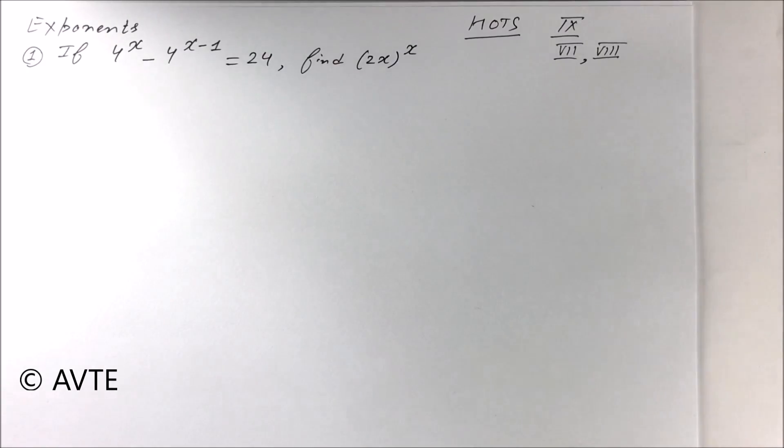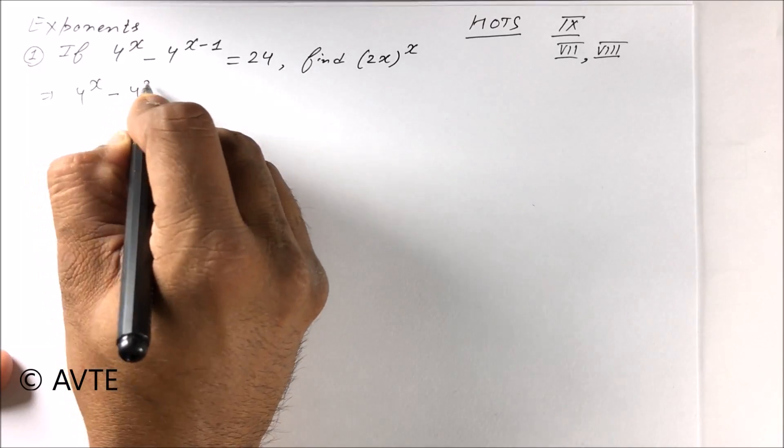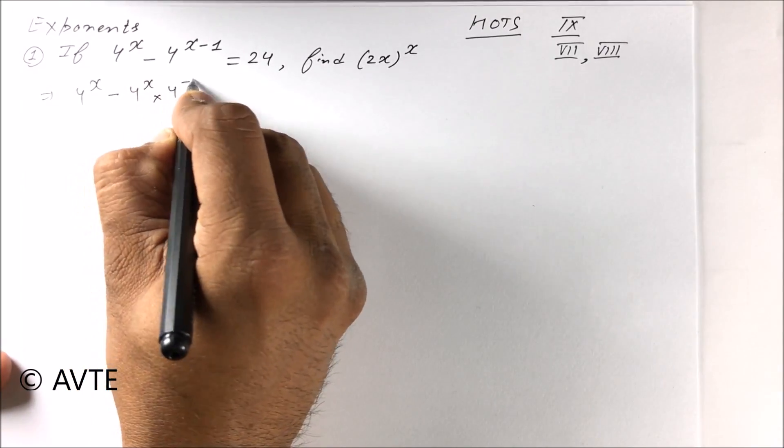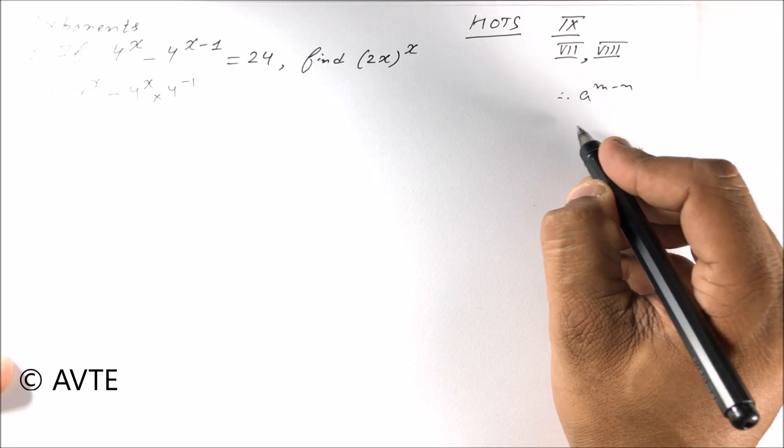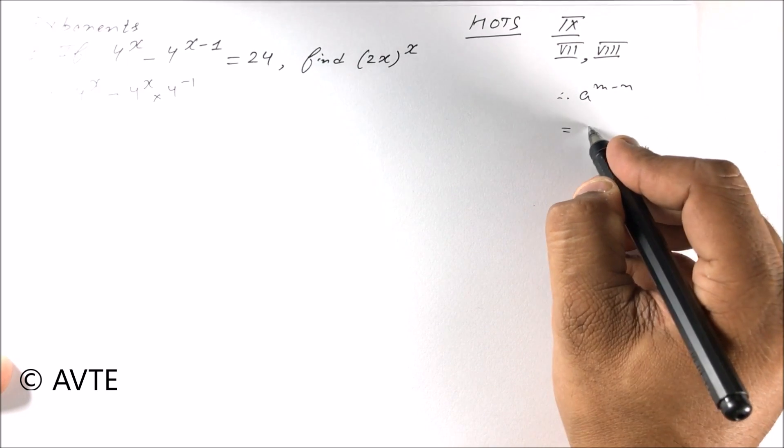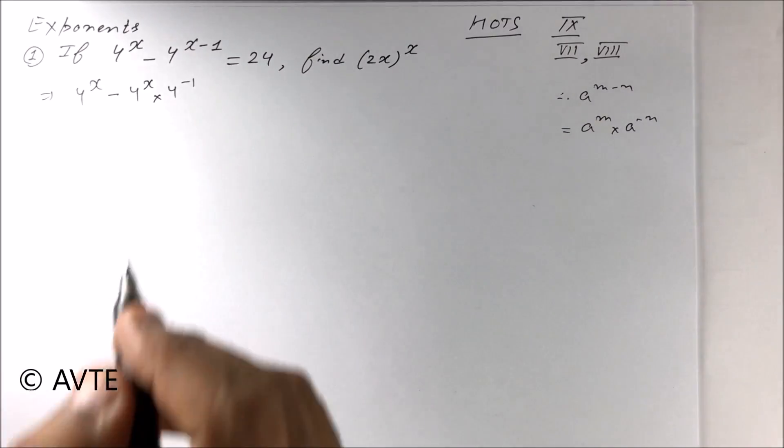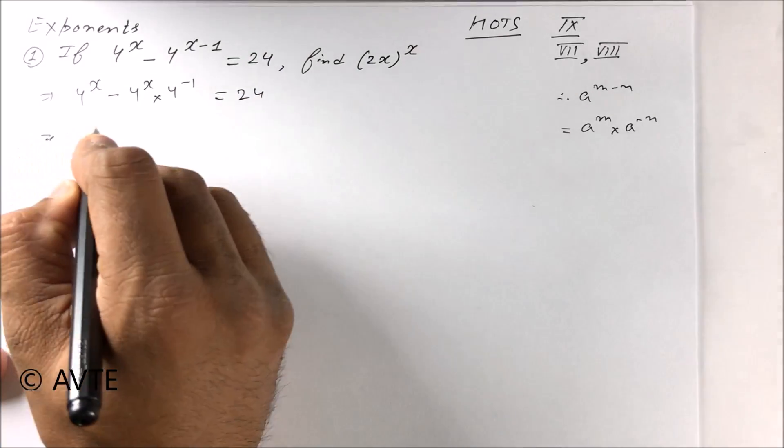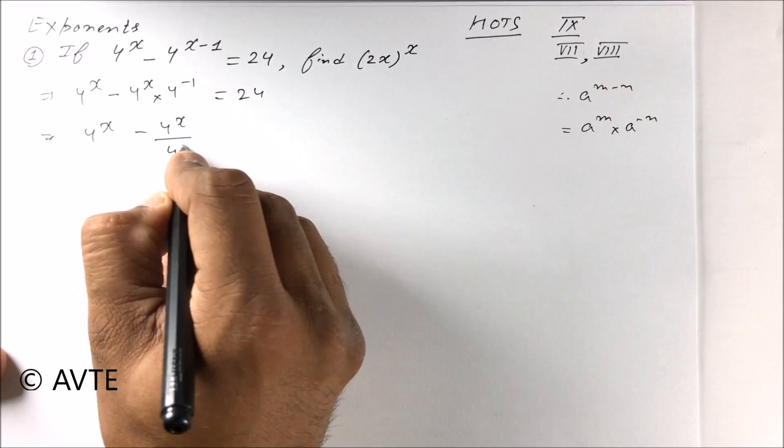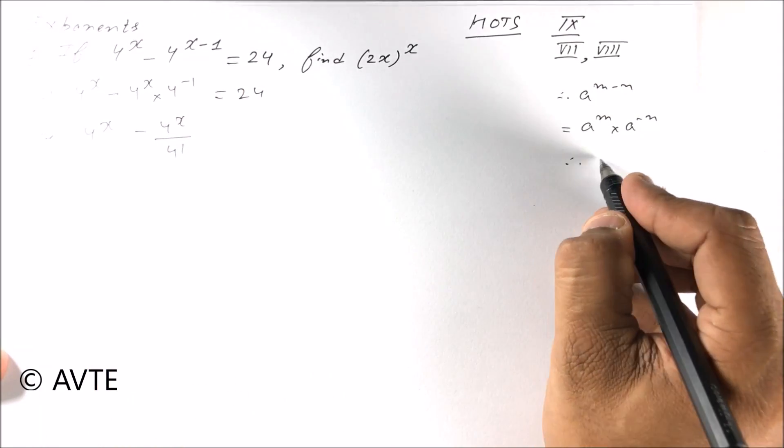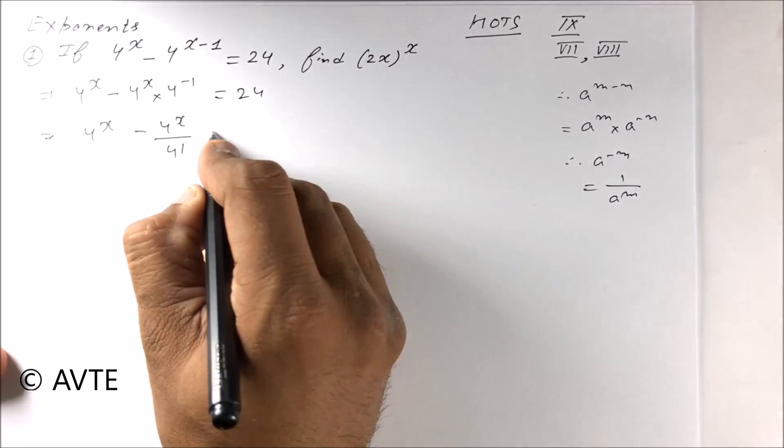In this question we have to find x. We have 4 raised to power x minus 4 raised to power x into 4 raised to power minus 1. Here we use the exponent law: a raised to power m minus n is a raised to power m into a raised to power minus n, which is equal to 24. This is 4 raised to power x minus 4 raised to power x upon 4 raised to power 1. Again we use the law: a raised to power minus m is 1 upon a raised to power m, equal to 24.